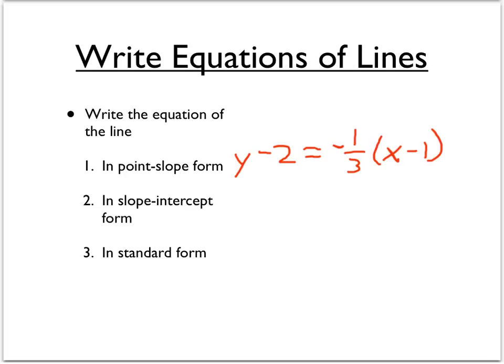So a quick recap. In point-slope form, the equation of that line is y minus 2 is negative 1 third times the quantity x minus 1. Slope-intercept form is y equals negative 1 third x plus 2 and 1 third. And standard form is x plus 3y is equal to 7.